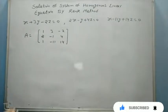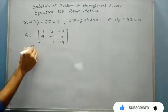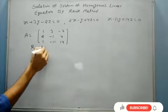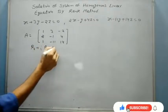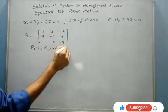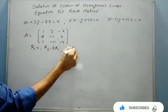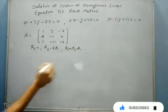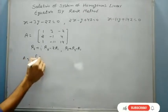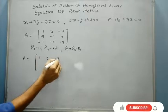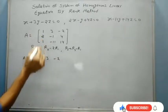Now to find the rank, we use row transformation. R2 goes to R2 minus twice of R1, and R3 goes to R3 minus R1. So what we have got here: that will be 1, 3, minus 2.